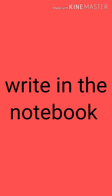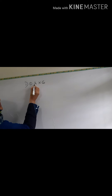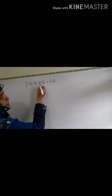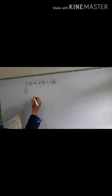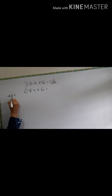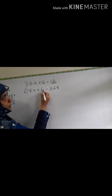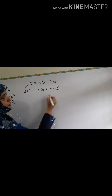Now practice problems. First: 0.2 into 6. Remove the decimal — it becomes 2. 2 into 6 is 12. After the decimal there is one digit, so from the right side it will be 1.2. Next: 8 into 4.6. Remove the decimal and multiply: 46 into 8 is 368. After the decimal there is only 1 digit, so from the right side the answer is 36.8.